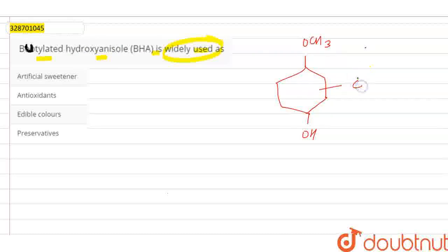We have 4 carbons attached to this. This is C(CH3)3. This is the conjugation of my structure. This is my structure of butylated hydroxyanisole.